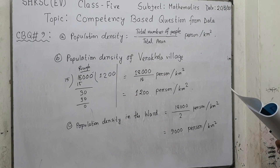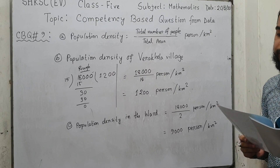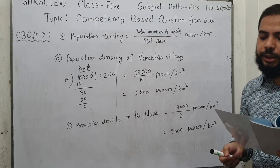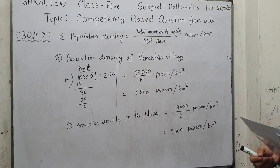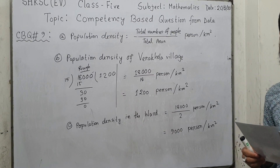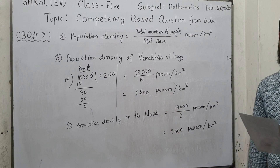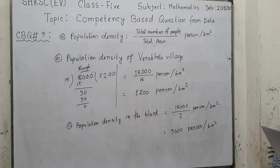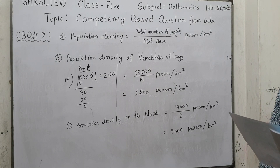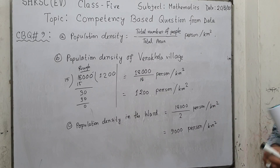Question number 10: Village A has 550 people in an area of 50 square kilometers and Village B has 320 people in an area of 20 square kilometers. Find the population density of Village A, Village B, and determine in which village people live more densely. This question is exactly the same type as Question 8, so Question 10 will be your homework.